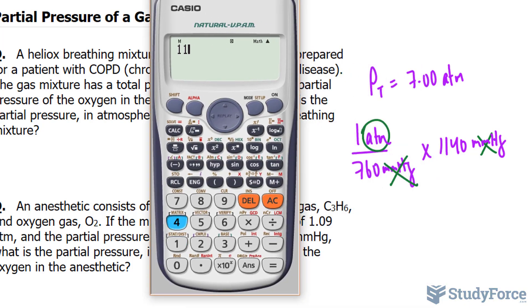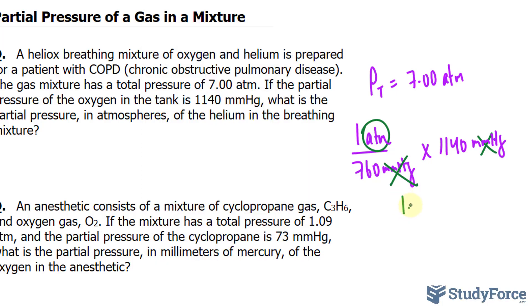So we have 1,140 divided by 760, and we get exactly 1.5. We need this to three significant figures, so 1.50 atmospheres.